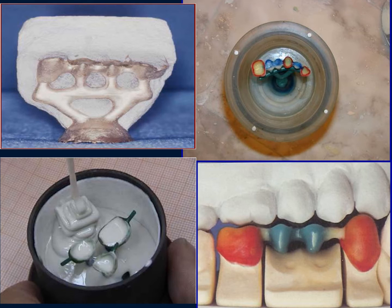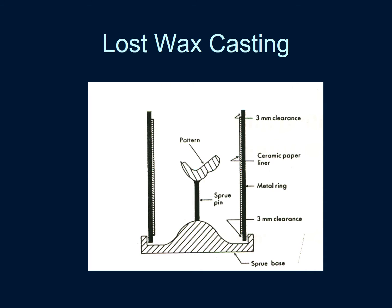Refractories are materials that can withstand high temperatures of up to 1,500 degrees Celsius. They are used to construct molds used in lost wax techniques for the fabrication of metal restorations and the hot pressing of ceramic restorations.